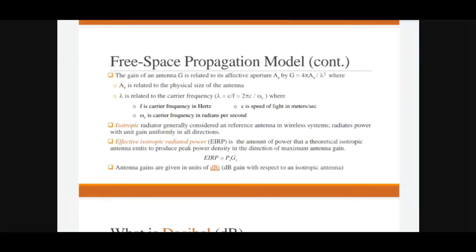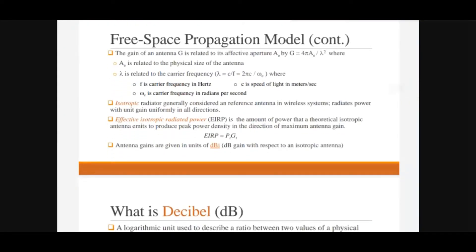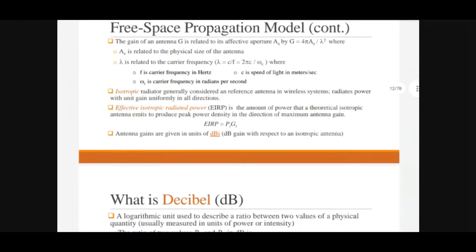EIRP is the Effective Isotropic Radiated Power — the amount of power an isotropic antenna emits to produce peak power density in the direction of maximum antenna gain. EIRP is the product of transmitting power and transmitting gain: Pt × Gt. Antenna gains are mostly described in the unit decibels, and we write dBi when considering isotropic antennas, meaning gain in decibels for an isotropic antenna.